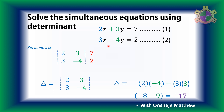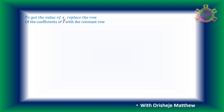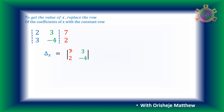Next, for step 2: to eliminate the value of x, we replace the column of the coefficients of x with the constants column. So we replace 2 and 3 with the constants 7 and 2 to form a new coefficient matrix. We then find the determinant of this new matrix.